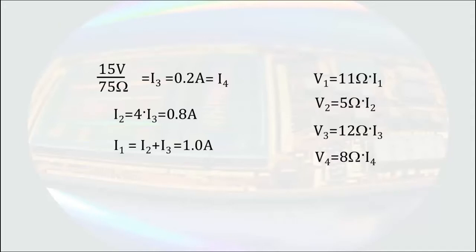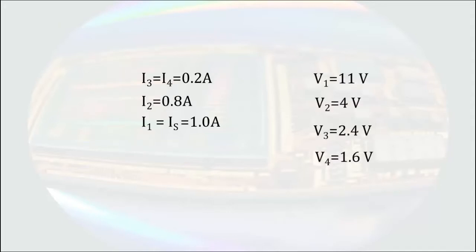So the values for all our currents and voltages are summarized here. The values drawn back into the schematic would look like this.